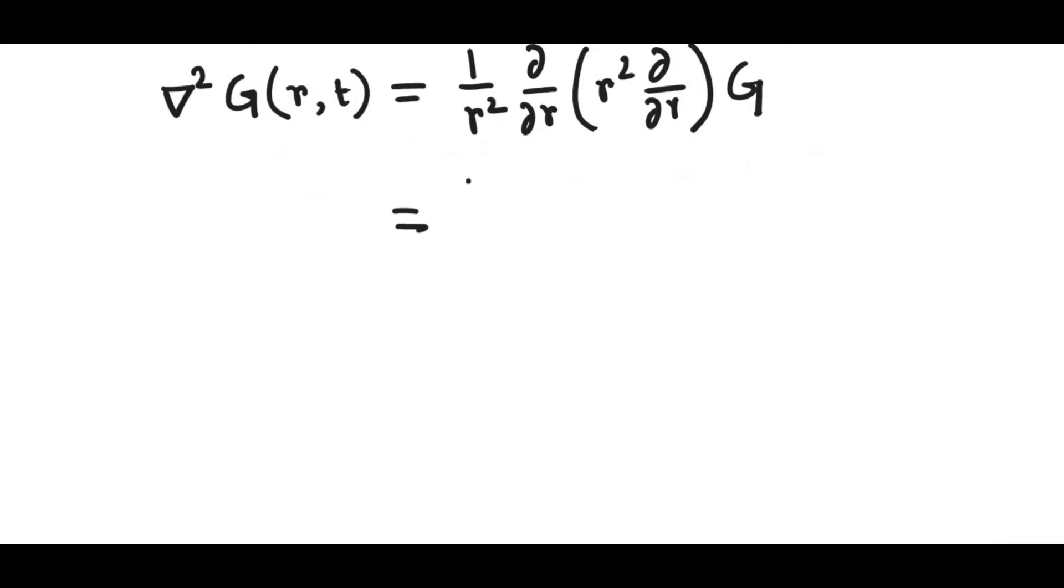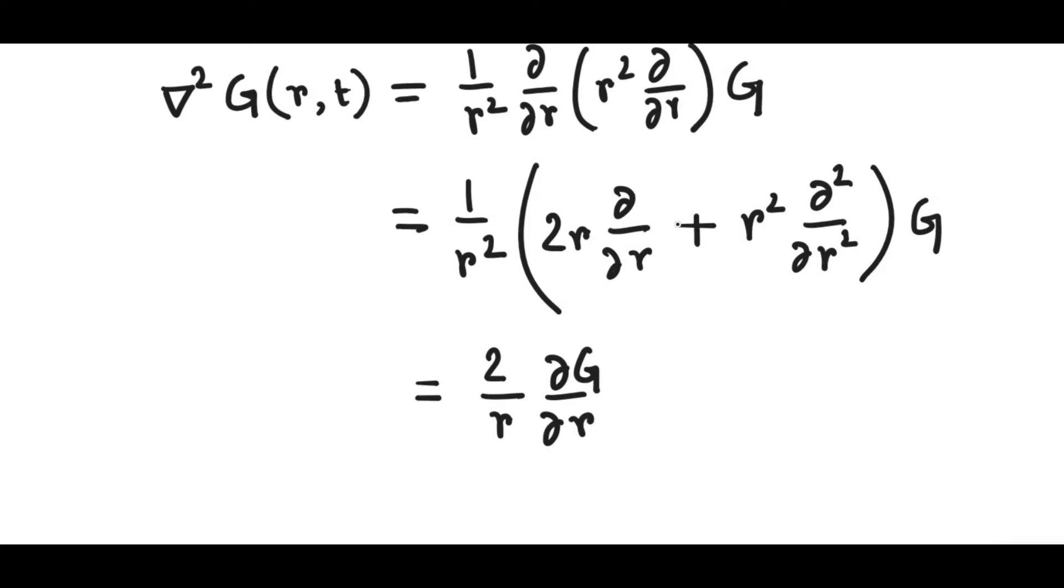Now, we expand this, we get 1 over R squared sitting outside, and this first acts on this one, so we get 2R ∂/∂R plus R squared, and then second order partial derivative with respect to R acting on G. So if we take this into account, we get 2/R ∂G/∂R plus the second order partial derivative of G with respect to R.